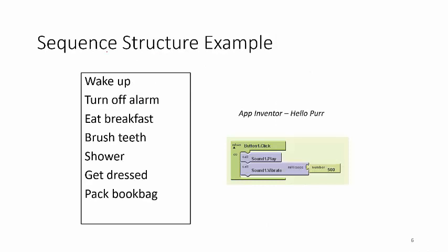The sequence structure example, we'll just do steps getting up in the morning. Here is the previous version of App Inventor. The button is clicked, we're going to play a sound, and we're going to vibrate in sequence.